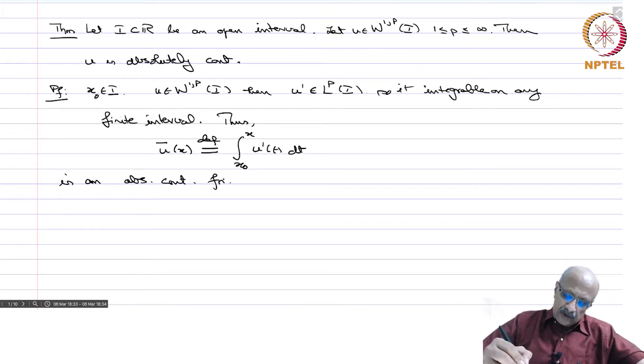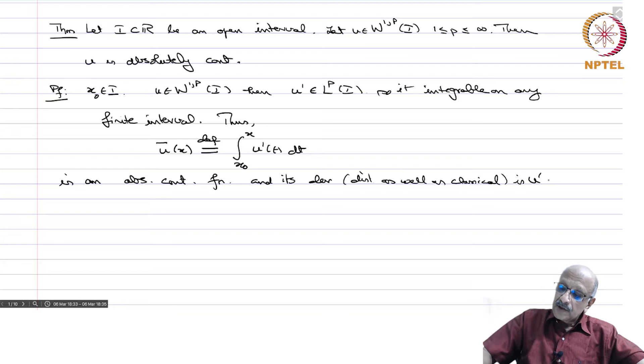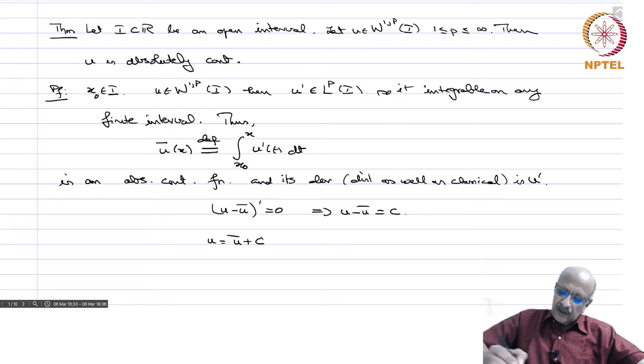It is an absolutely continuous function and its derivative, distribution as well as classical, is u'. Therefore u minus u̅ has derivative equal to 0, and this implies that u minus u̅ must be a constant. Therefore, u equals u̅ plus c almost everywhere. And therefore, this implies that u is absolutely continuous.